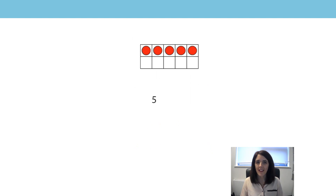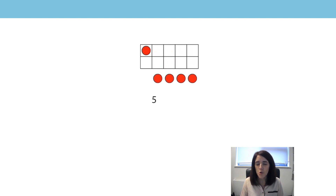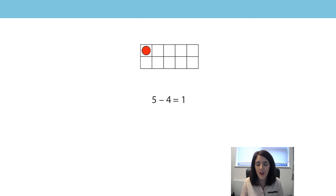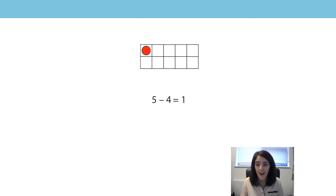Let's check it. I have five counters on my tens frame — five is the minuend. And I'm going to subtract four, so four is my subtrahend. Five subtract four is one because I have one left over. I think we've found a new generalisation: consecutive numbers have a difference of one, and that is always true.